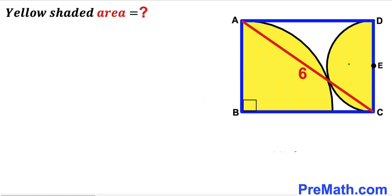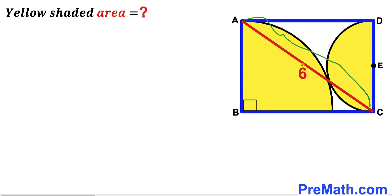Welcome to PreMath. In this video we have a yellow shaded semicircle with center E and a yellow shaded quarter circle with center B inscribed in a blue rectangle ABCD, as shown in the diagram, such that they are tangent to each other at a point. Moreover, AC is the diagonal of this blue rectangle and this diagonal is 6 units long. Our task is to calculate the area of this yellow shaded region — both areas combined.